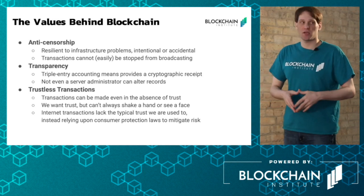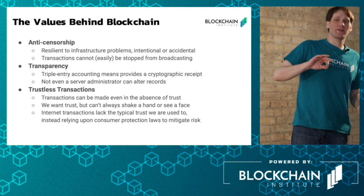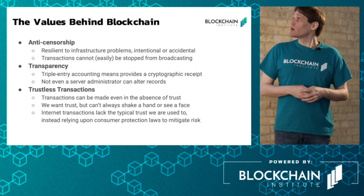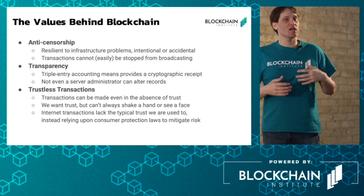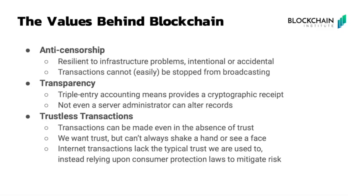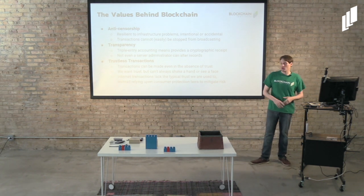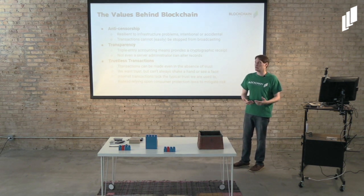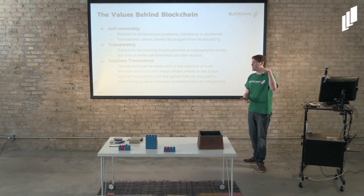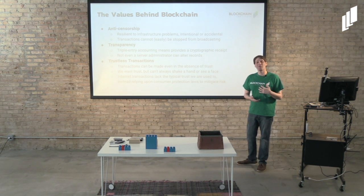There are certain values behind blockchain. Satoshi had values he wanted to carry over to the network — anti-censorship and resilience to infrastructure problems, intentional or accidental. Basically, if you want to spend your money, no institution can stop you from spending it or sending it to whoever you want on the Bitcoin network. Transparency is also a big aspect of blockchain technology. That digital receipt is public to everybody and has all the details of what occurred on the blockchain — all that transaction data. It's easy to look up a transaction as far back as the inception of the blockchain, because everything is recorded and every member of the network has a copy of that ledger.